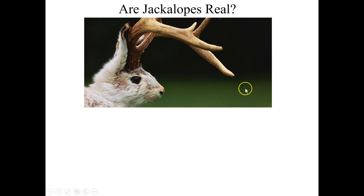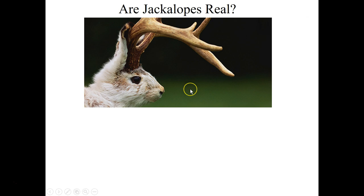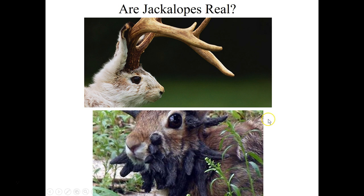Maybe you've heard of jackalopes — a mixture of a rabbit and an antelope. Are they real? Well, there is a virus that causes rabbits to sprout little horn-like structures from their body. Also, viruses can control behavior: the gypsy moth caterpillar's behavior can be altered by a virus that causes the caterpillar to climb to the top of a tree and then explode, releasing viruses into the air.